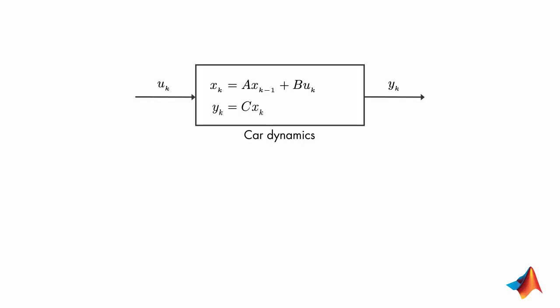But the GPS readings will be noisy. We'll show this measurement noise with V, which is a random variable. Similarly, there is process noise, which is also random and can represent the effects of the wind or changes in the car's velocity.